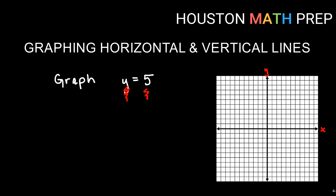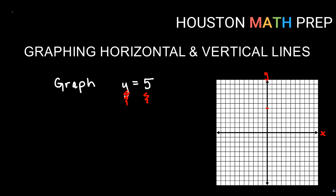So positive 5 is here, and it will cross through that axis there. It will not cross the x-axis. So that makes it a horizontal line — if it's only crossing the y-axis and it's never going to cross the x-axis, we will get a line for y equals 5 that looks like that.